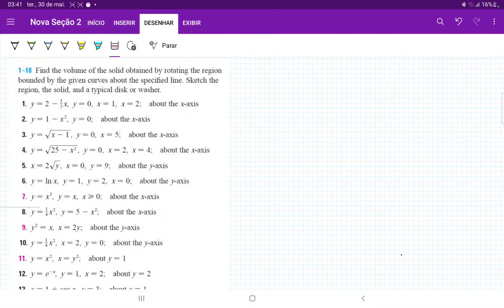Number 11, we're finding the volume by revolving the area between these curves about the line y equals 1. So let's draw these curves.